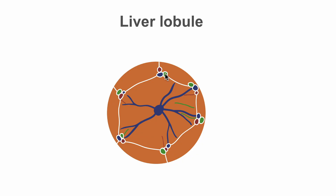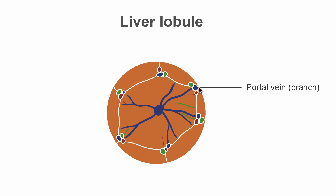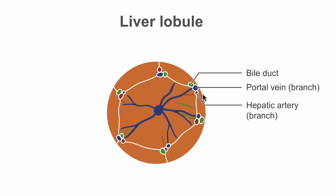The liver lobule is organized into a hexagonal field. On the edge of each corner of the liver lobule is a portal triad, which consists of a portal vein branch, a hepatic artery branch, and a bile duct. The blood flows from the portal triad into the liver lobule center, where it is drained by a central vein. As it flows through the capillary sinusoids, it is cleared. The bile flows in the opposite direction, being drained over the bile ducts.